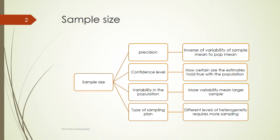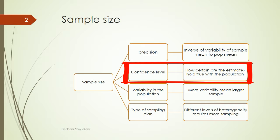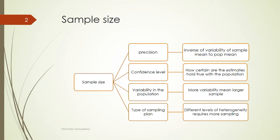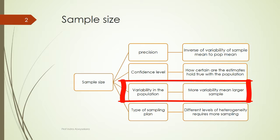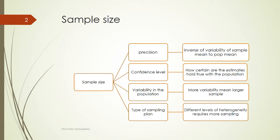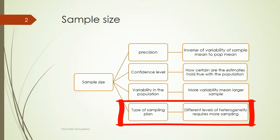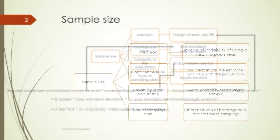Confidence level is how confident we are that the estimates of the sample hold true for the population. Variability is how much variability exists in the population — if there is a lot of variability in the population, then we need a larger sample. The type of sampling plan depends on the research problem.